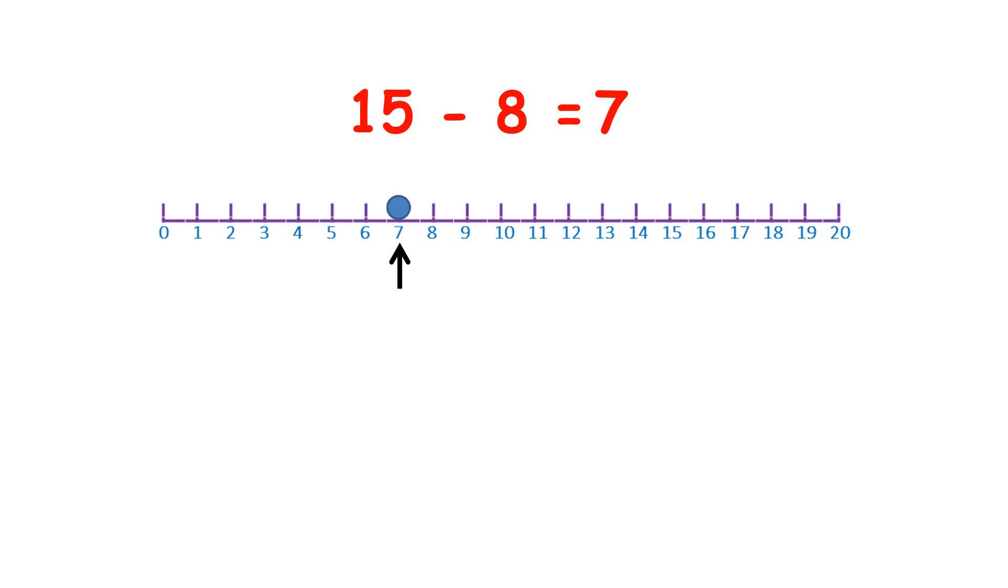Well, so far with subtraction, we've been going backwards rather than forwards, and we've always started with the first number in our subtraction. So we started with 15 and went back 8. We don't start with 8 and try and go back 15. Whereas with addition, it doesn't matter which number you start with. Now there are different ways of subtracting on a number line, which we'll learn in a different video.